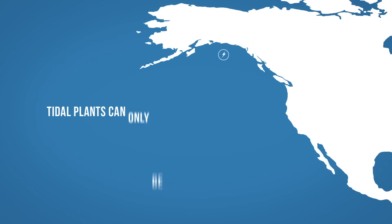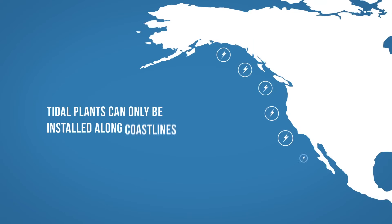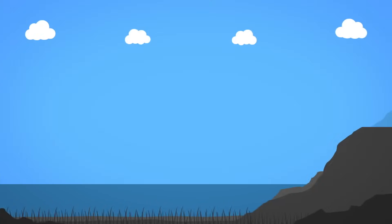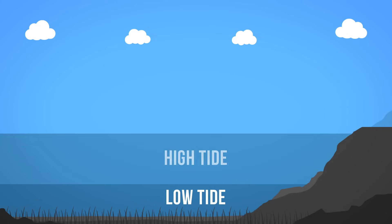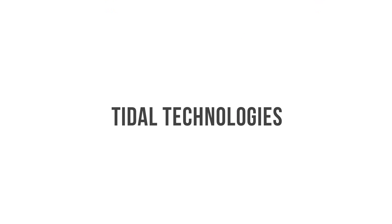Tidal plants can only be installed along coastlines. Coastlines often experience two high tides and two low tides on a daily basis. The difference in water levels must be at least five meters high to produce electricity.